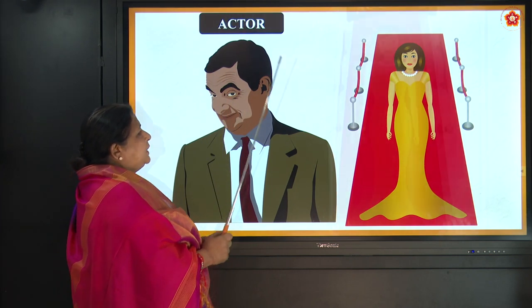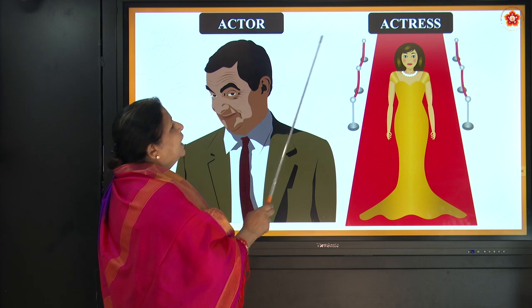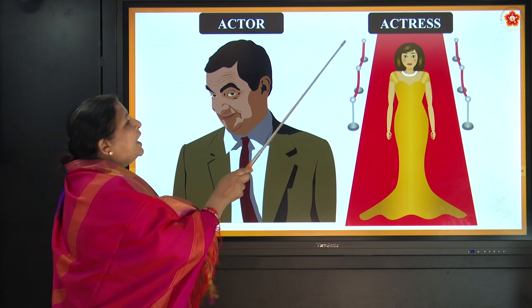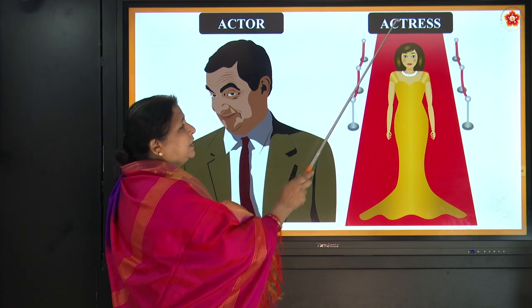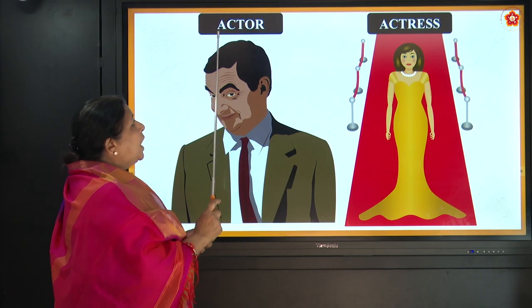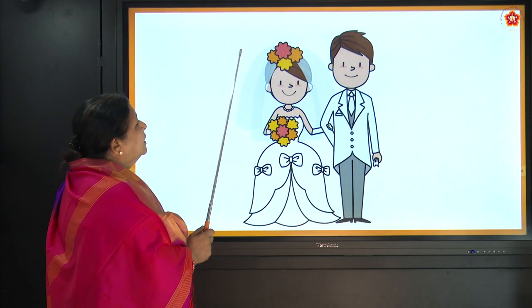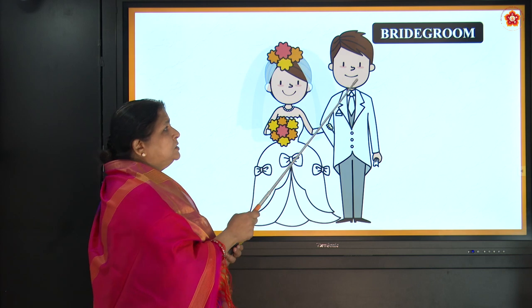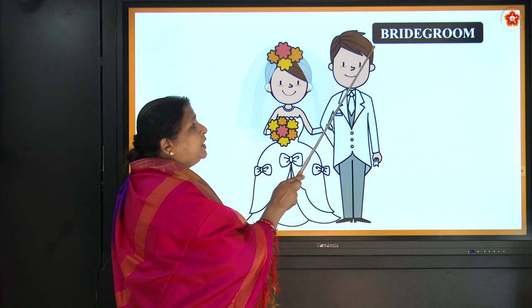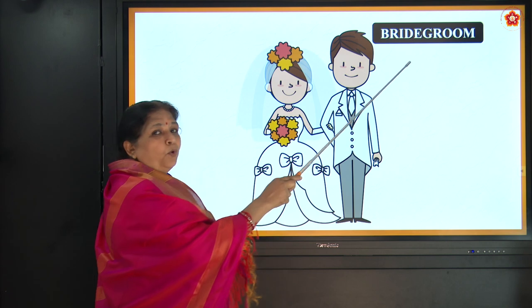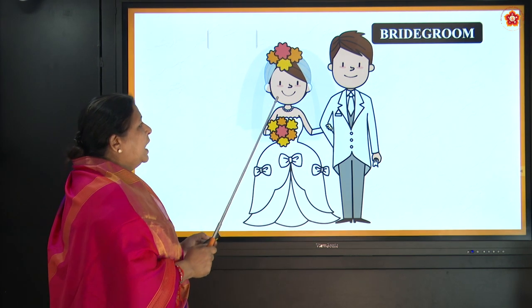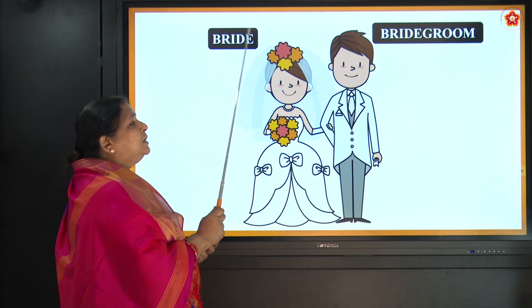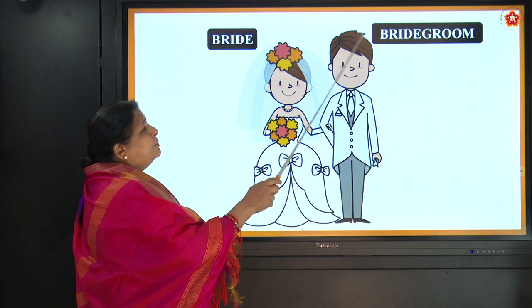Actor, A-C-T-O-R, and actress, A-C-T-R-E-S-S. You know this actor — Mr. Bean, right? Very good. Then we have bridegroom: the boy when getting married is called bridegroom, B-R-I-D-E-G-R-O-O-M. And the woman is called bride, B-R-I-D-E. So, bride and bridegroom.